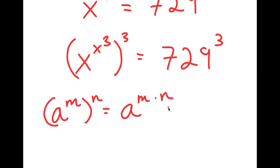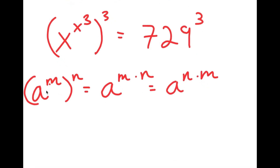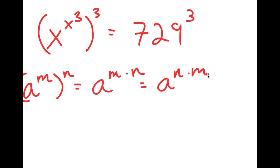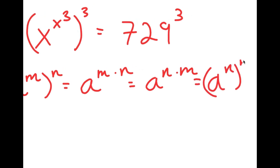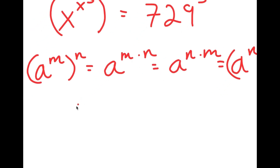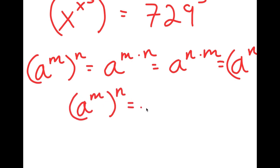Now, m times n I can also rewrite as n times m. And if something in the form a to the power of m to the power of n equals a to the power of m times n, then a to the power of n times m should also equal a to the power of n to the power of n. So in simpler terms, a to the power of m to the power of n is equal to a to the power of n to the power of m.